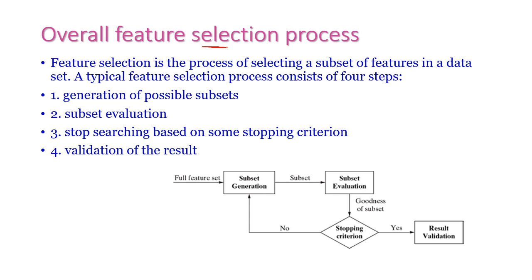In the overall feature selection process, we are going to select the subset of features from the overall dataset. There are 4 steps: first, generation of possible subsets; second, subset evaluation; third, stop searching based on some stopping criterion; and fourth, validation of result. The full dataset will be given to subset generation, and the output will be a feature subset. That selected feature subset will be given to subset evaluation. The evaluated result will be given to the stopping criterion. If the stopping criterion accepts that result, then the result will be validated. Otherwise, it will go again to subset generation.